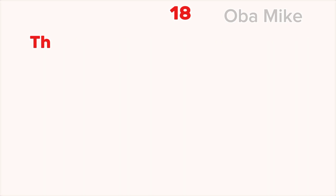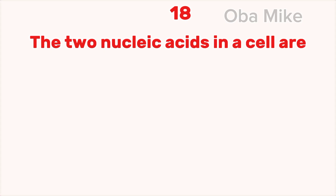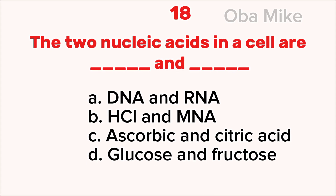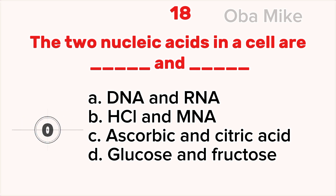18. The two nucleic acids in a cell are dash and dash. A. DNA and RNA, B. HCL and MNA, C. Ascorbic and citric acids, D. Glucose and fructose. The correct answer is A. DNA and RNA.